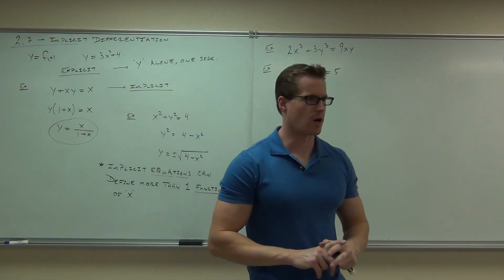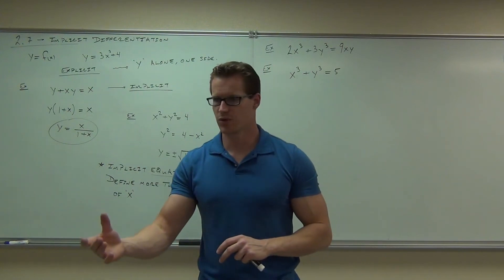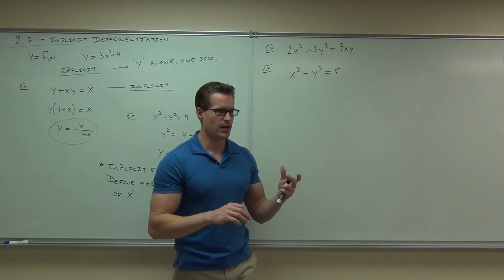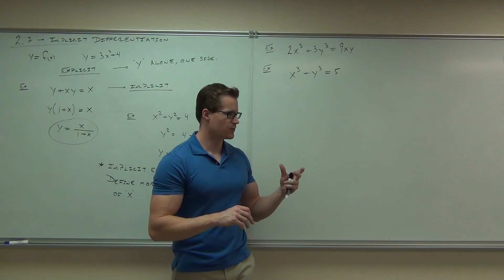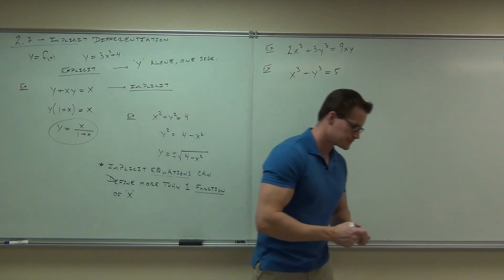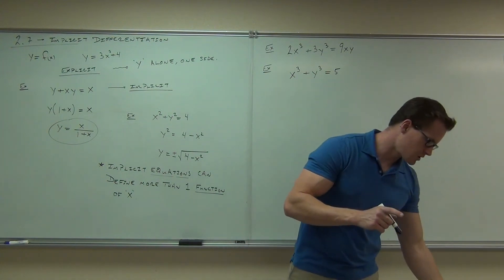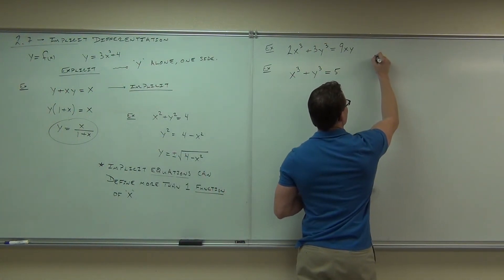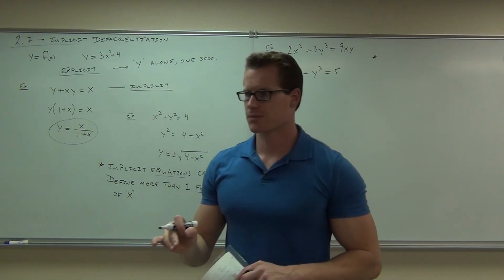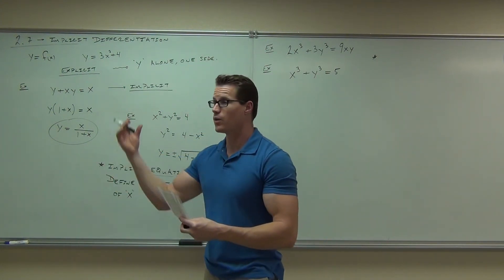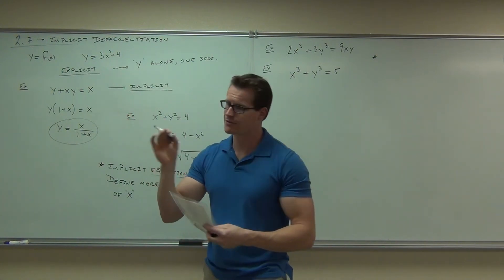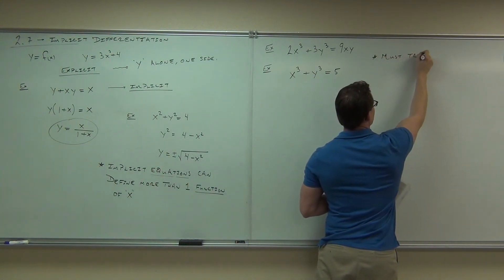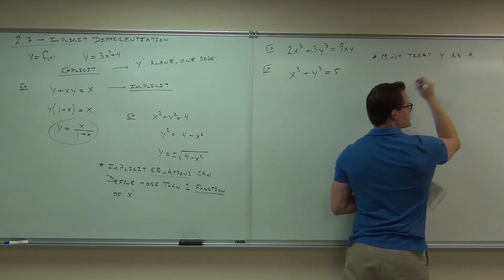Now, we could actually solve this one for y. Do you see that? We'd subtract x cubed. We'd take a cube root. It would be just fine. You could find the derivative that way. But what I'm trying to show you today is how to do this without having to do that, by just solving for the derivative, or solving for the derivative, without having to solve for y. Because of examples like that, which we're going to have to do that. So, we could solve for y and take derivative, or we could use implicit differentiation. Here's the whole deal, though. In order to do this, you must treat y as a function of x. Because if you could solve it for y, y would equal something in terms of x, right? So, you have to treat it, and that's going to be important here in just a second.